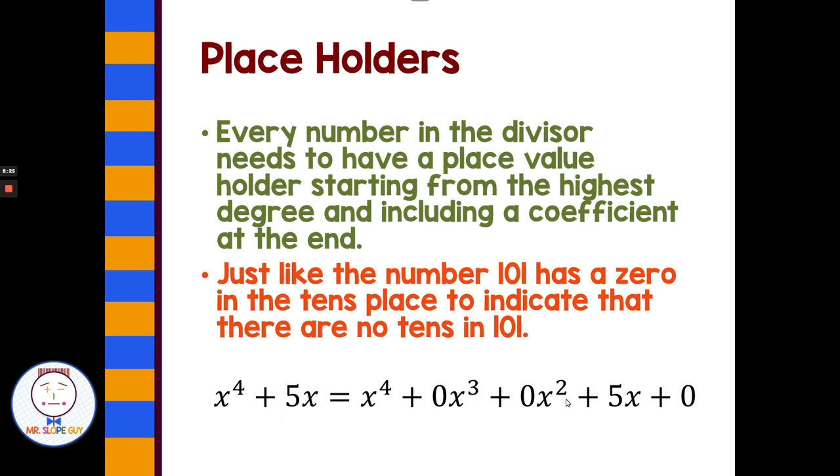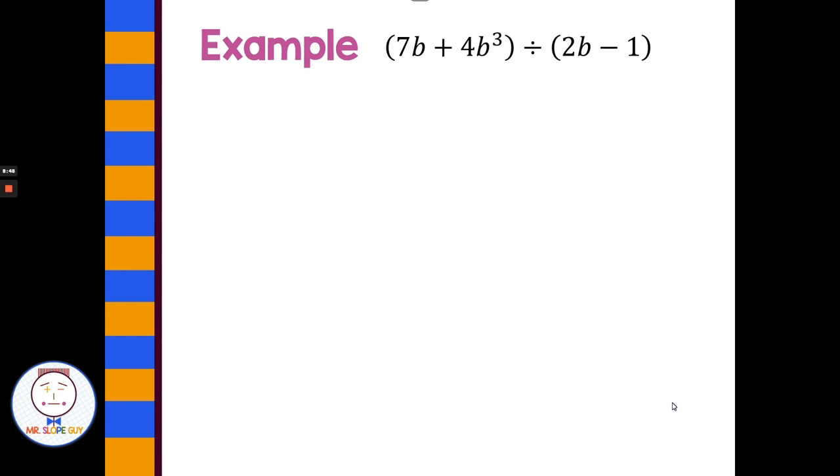So I'm going to add in plus 0x to the third because multiplying by zero is still zero, so I'm not changing the value of the polynomial. I can put in a 0x squared for a placeholder for the x squared so that if I have a degree of 4, then I have 3, then 2, then 1, and then a constant. So let's look and see what that looks like in a problem. If I have 7b plus 4b to the third, to put that into having placeholders, I would have to have a 0b squared and a plus 0 at the end. Then I could go ahead and divide it.